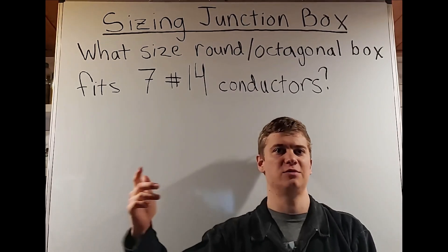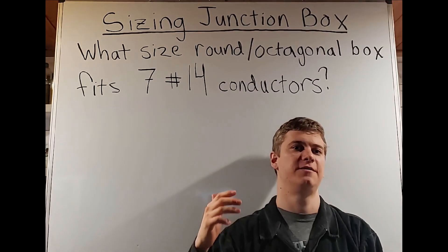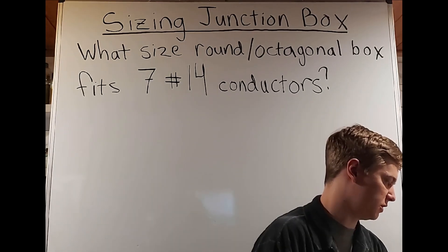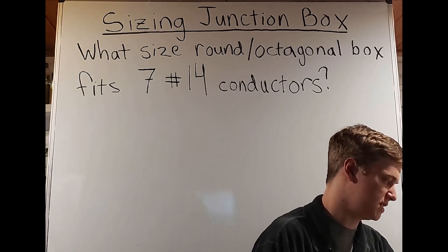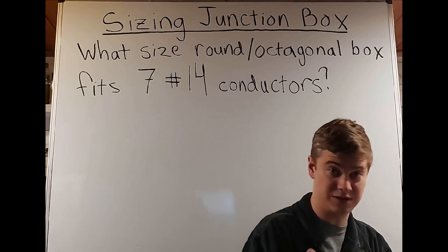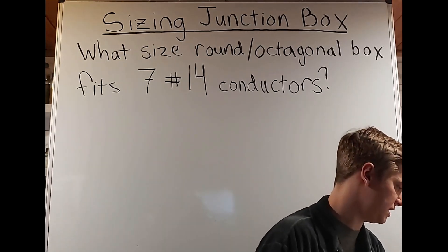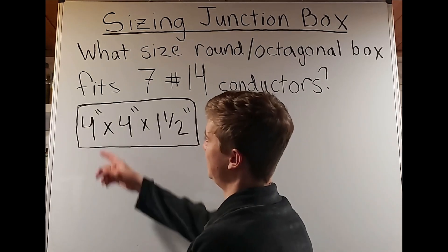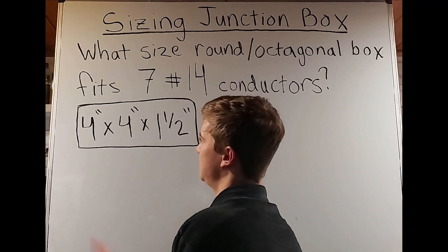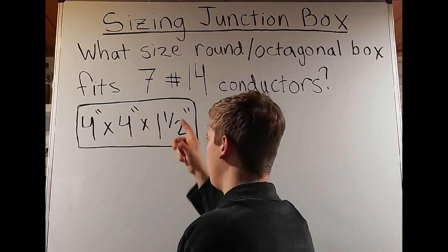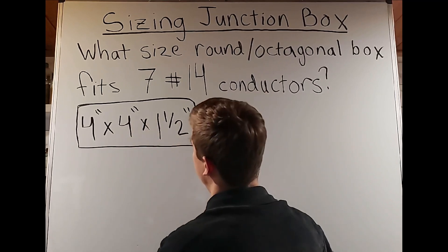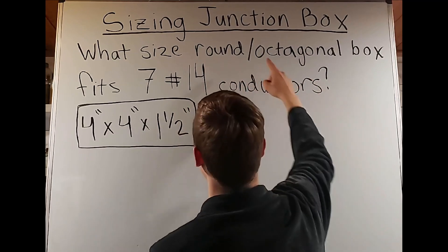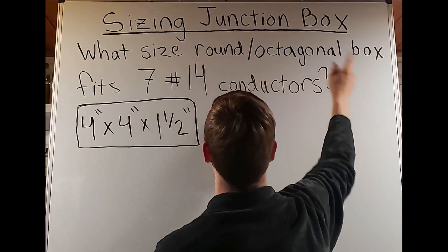Next question: what size round/octagonal box fits seven number-14 conductors? Looking again at the round/octagonal section, this time under number-14, we see the number seven, and we see that is a four by one-and-a-half inch. Just like before, the first number is doubled — so we have a four by four by one-and-a-half inch box that can fit seven number-14 conductors in a round/octagonal box.